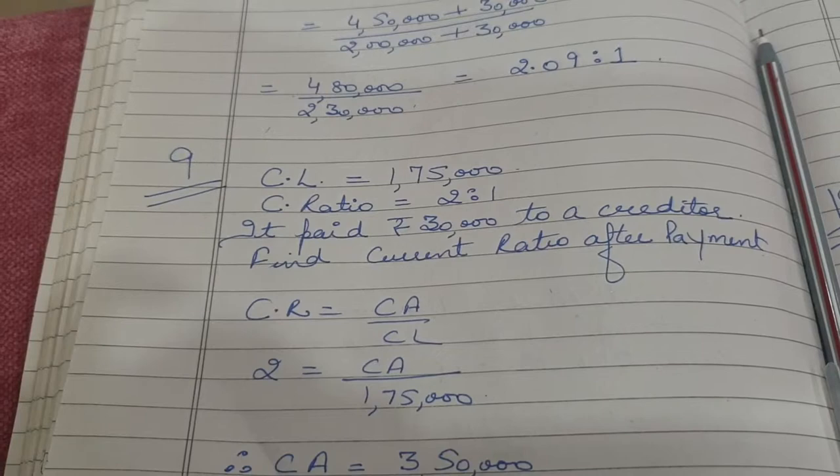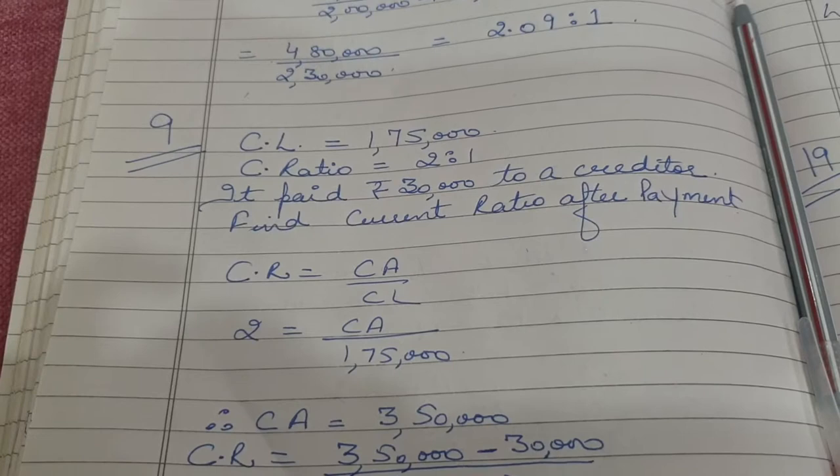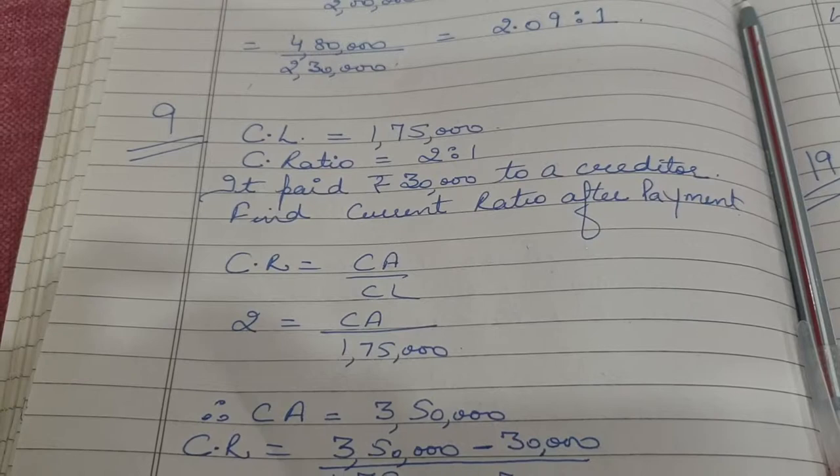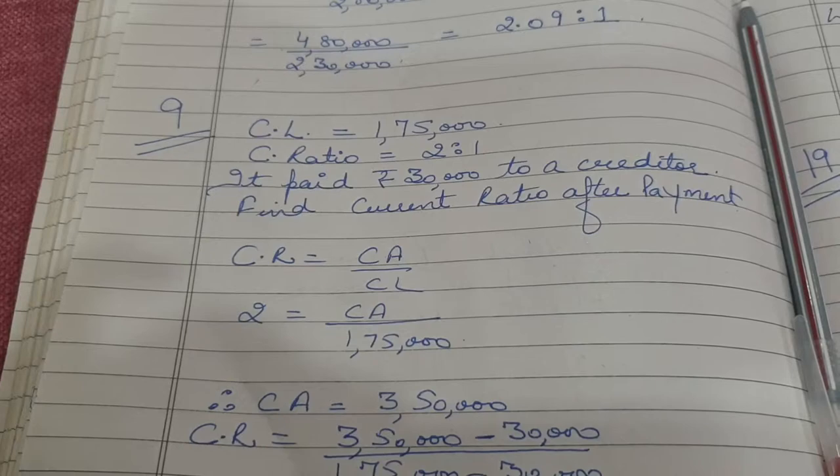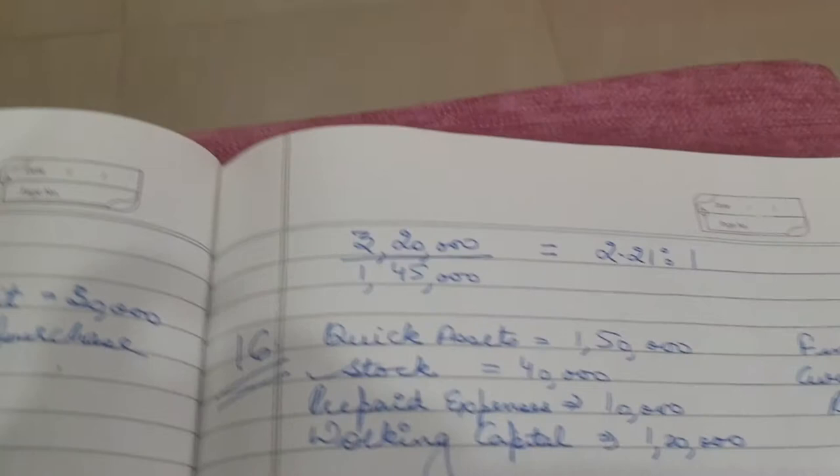Now we find the current ratio after the payment. The payment causes a reduction of Rs. 30,000 in current assets and Rs. 30,000 in current liabilities. So current ratio = (3,50,000 − 30,000) / (1,75,000 − 30,000) = 3,20,000 / 1,45,000 = 2.21:1.